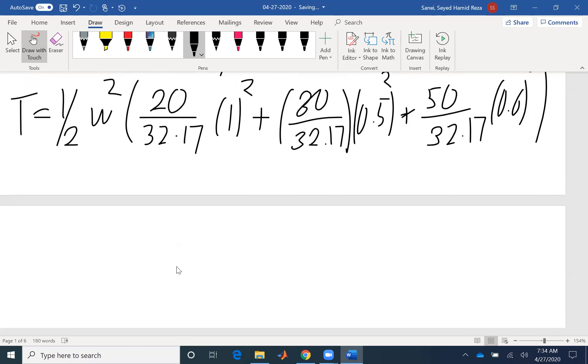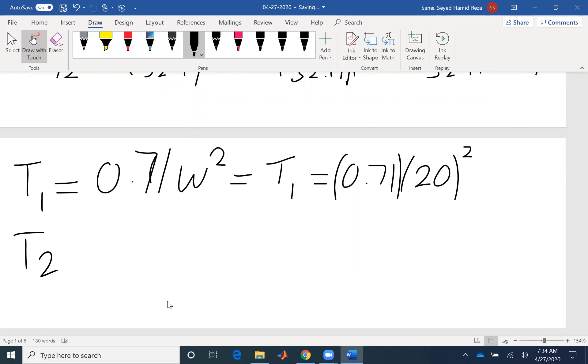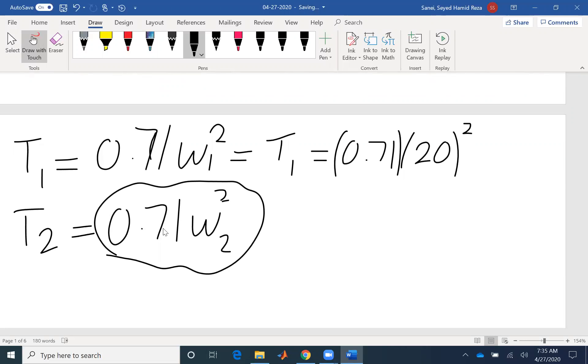For the final stage, we don't have omega. So for T1, I'm going to write it as 0.71 omega squared. So that's the value that I get from the whole thing. And I have omega. So T1 would be 0.71 times 20 squared. T2, all the mass and the radii are the same. It's just the omega would be different that I don't have it. But I have found the general equation for it.